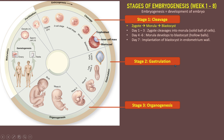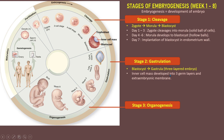Stage 2 is gastrulation, meaning the formation of 3 germ layers of the embryo. The blastocyst develops into gastrula, a 3-layered embryo. At this stage, the inner cell mass develops into 3 germ layers and extra embryonic membranes. The inner cell mass divides and differentiates into 3 germ layers: ectoderm, mesoderm, and endoderm. It also develops into extra embryonic membranes consisting of allantois, yolk sac, chorion, and amnion. The 3 germ layers will become the embryo, and the extra embryonic membranes will support embryo development.